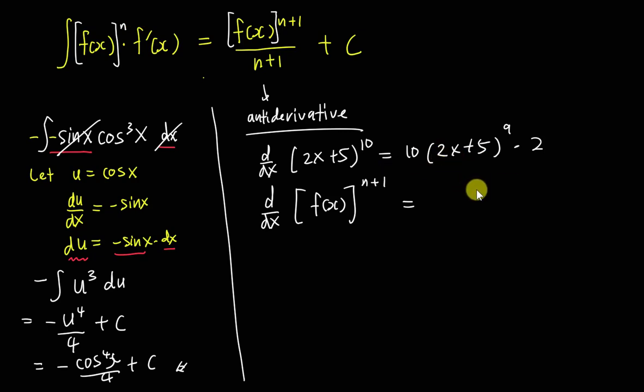Then I will apply similar rules here. So normally I will do: the n+1 I will move to the front and then minus 1. Then I have (n+1) and then this one will be f(x) to the power of n. And then we need to differentiate inside, which is we will differentiate f(x).